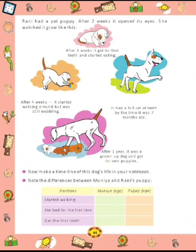Now on the next page, Rani had a pet puppy. After 2 weeks it opened its eyes, and she watched it grow. Now you can see here — this is the timeline of a puppy. You have to make a timeline of a dog in your notebook, and then compare the growth of Muniya and the puppy and fill in the table.